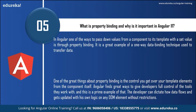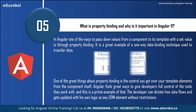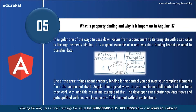Next question: what is property binding and why is it important in Angular 11? In Angular, one of the ways to pass down values from a component to its template with a set value is through property binding. It is a great example of a one-way data binding technique used to transfer data. Property binding gives you control over your template elements from the component itself. The developer can dictate how data flows and gets updated with their own logic on any DOM element without restrictions. There are two bindings shown here, and property binding is one of them.